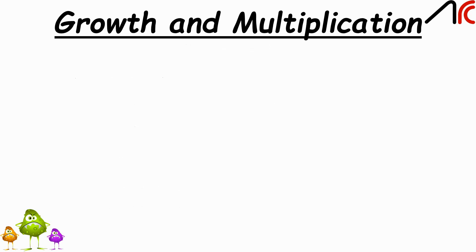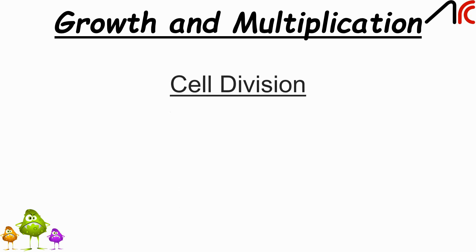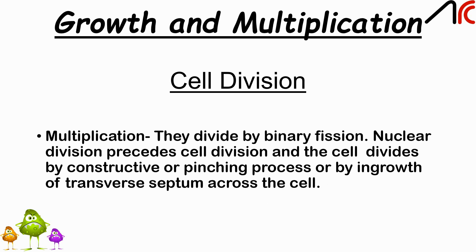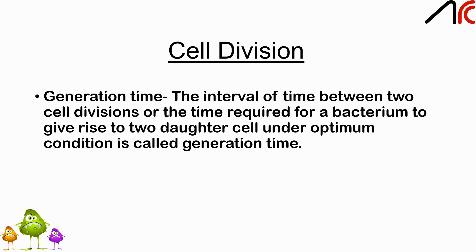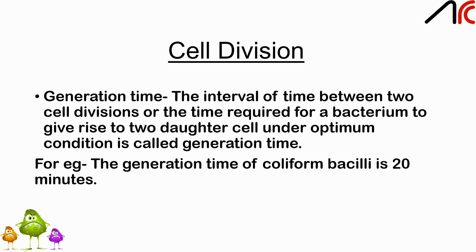Starting with growth and multiplication of bacteria — cell division. Bacteria divide by binary fission. Nuclear division precedes cell division, and the cell divides by a constriction or pinching process or by the ingrowth of a transverse septum across the cell. The interval of time between two cell divisions, or the time required for a bacterium to give rise to two daughter cells under optimum conditions, is known as generation time or population doubling time. The generation time for coliform bacilli is about 20 minutes.